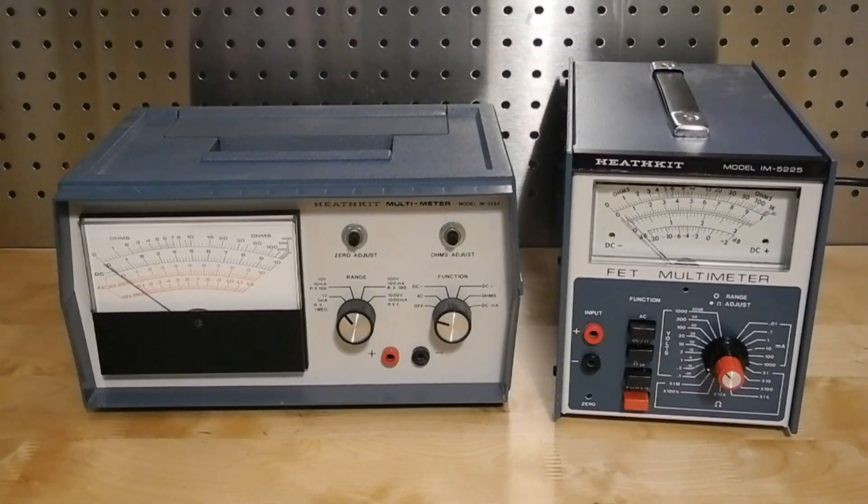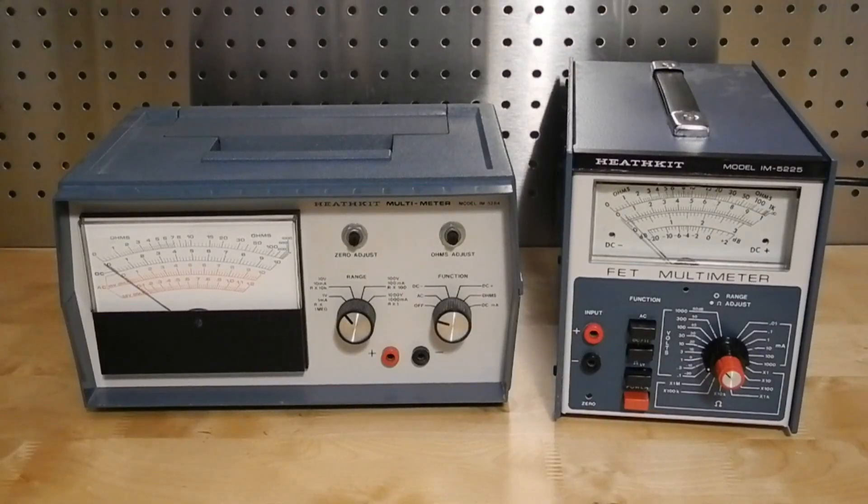The main disadvantages of VTVMs are that they are typically powered from the AC line, so they're larger than a VOM and not portable. They take some time for the tubes to warm up. And they typically still use a battery for the ohms function that must be periodically replaced.